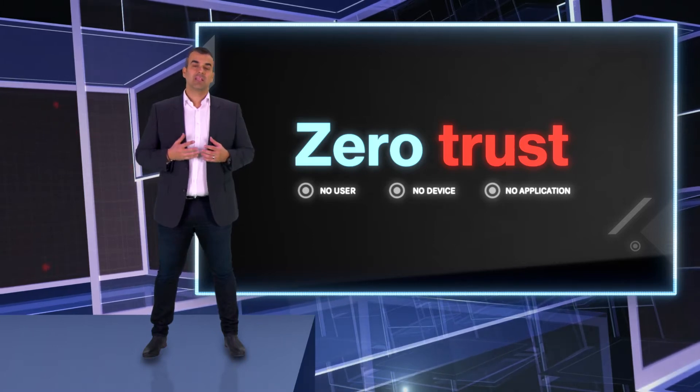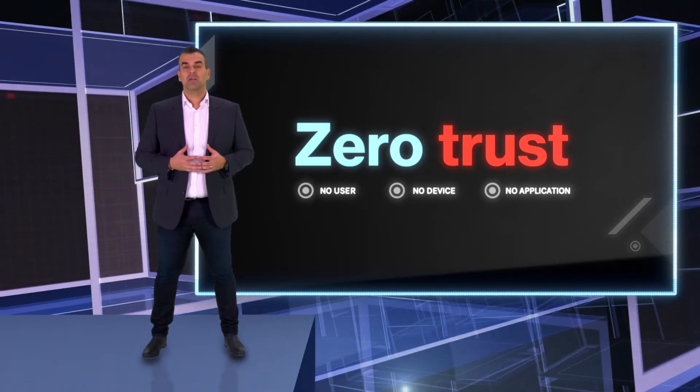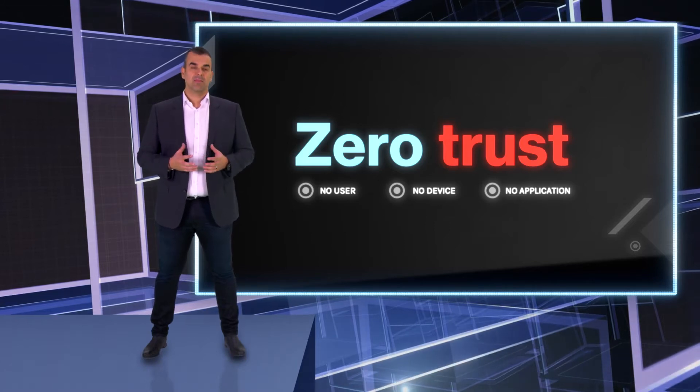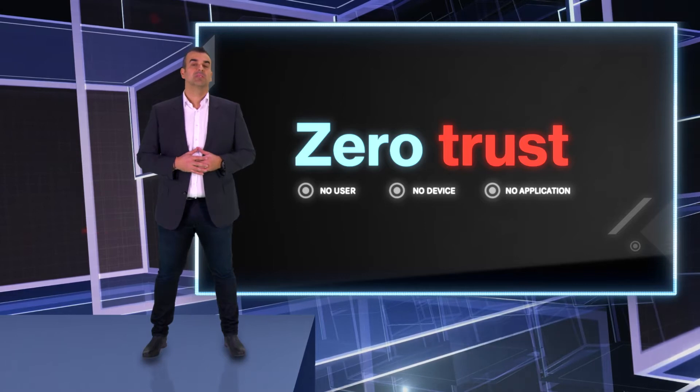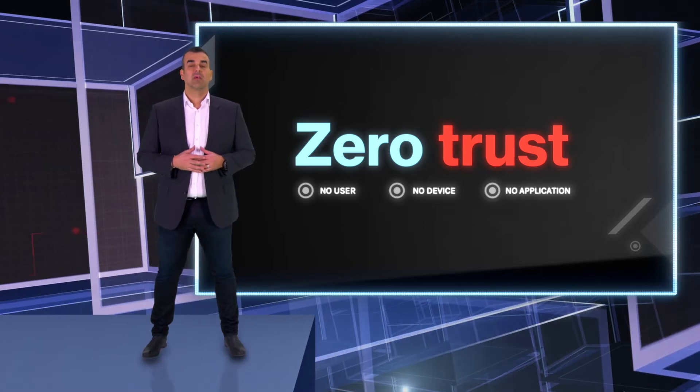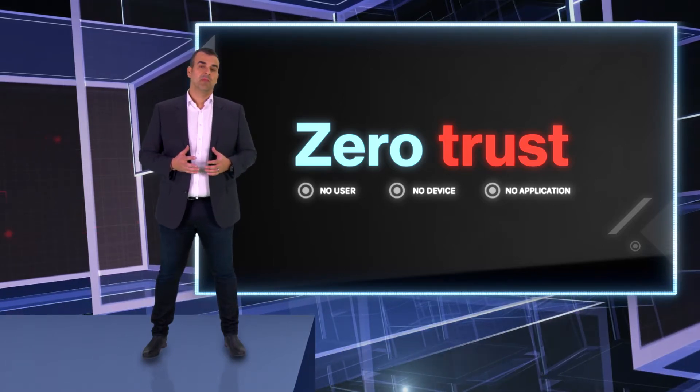Zero Trust is exactly as it sounds. It's an architecture based on the principle that nothing — no user, no device, or no application attempting to interact with your architecture — can be considered to be secure. So controlling access to applications, services and data should be reliant on verification of the device and the user being who they claim to be.